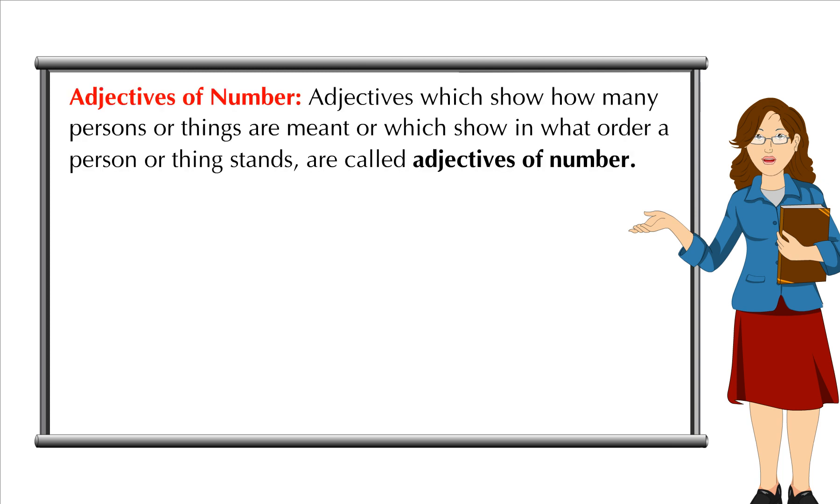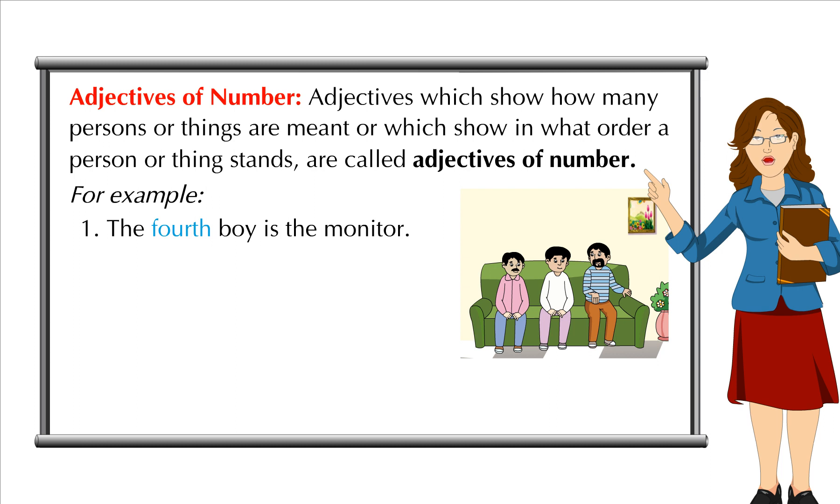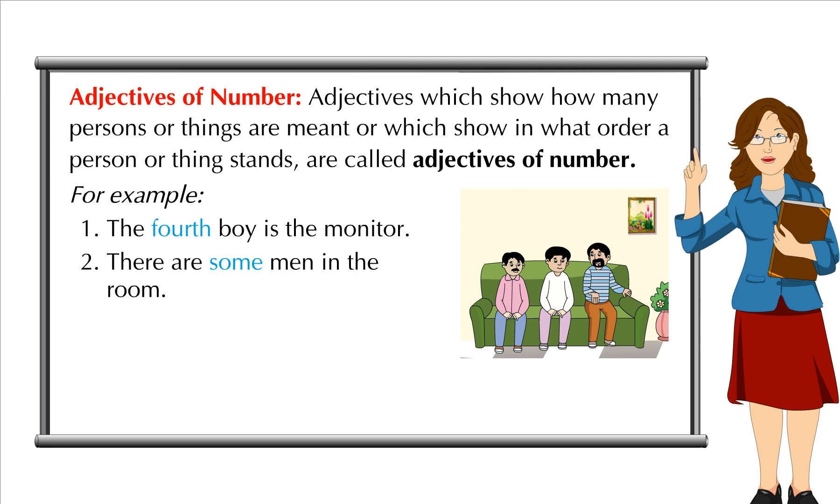Adjectives of Number: Adjectives which show how many persons or things are meant or which show in what order a person or thing stands are called Adjectives of Number. For example, the fourth boy is the monitor. There are some men in the room.